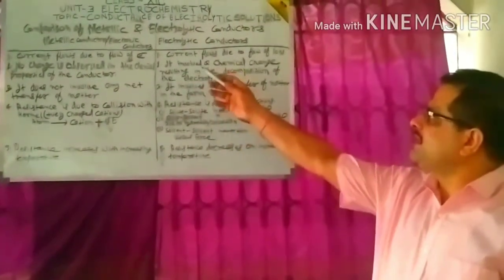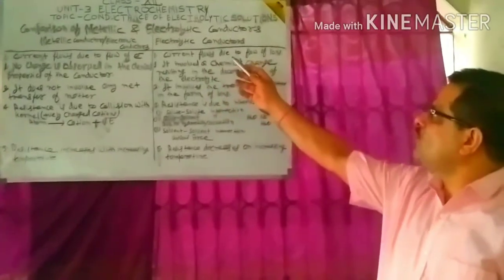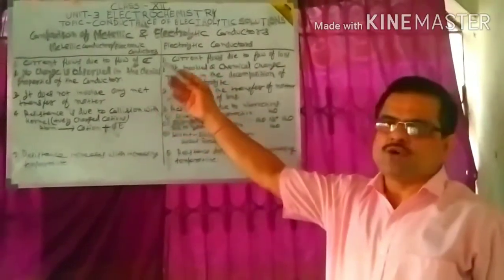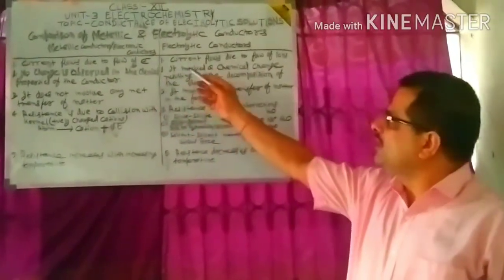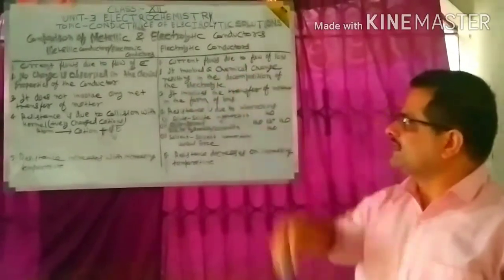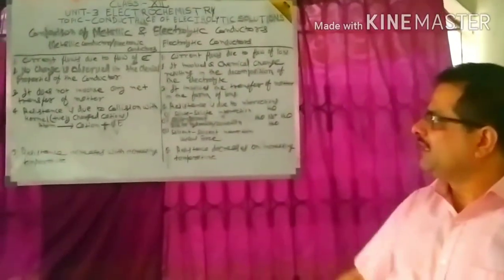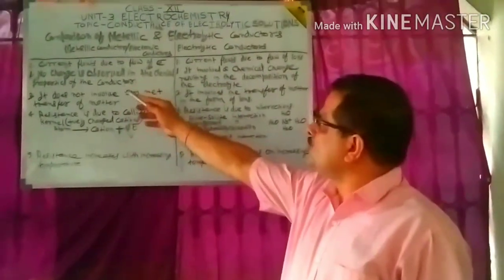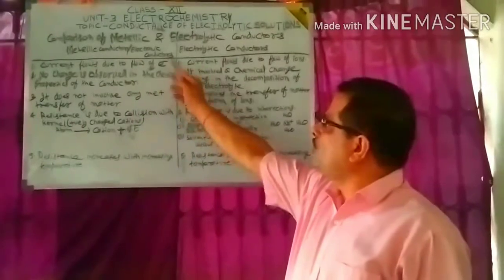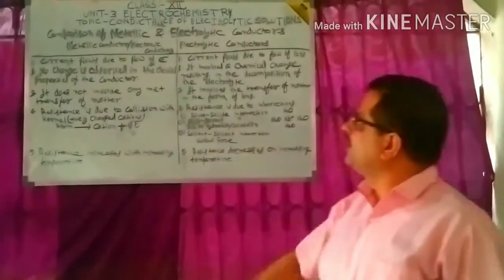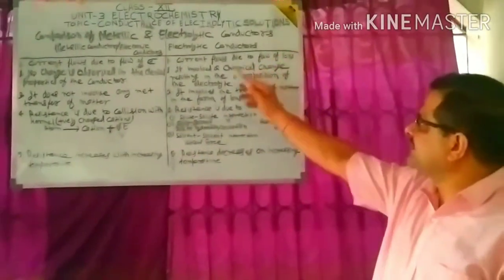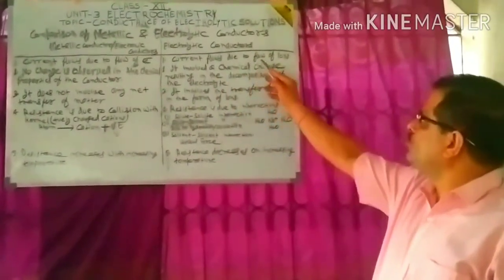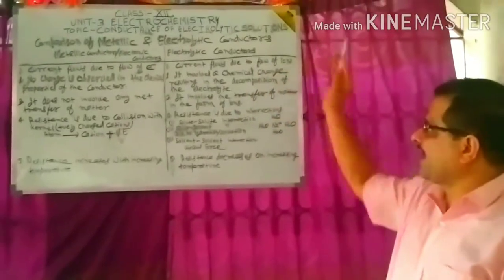Now, a comparison of metallic and electrolytic conductors. Metallic conductors are also called electronic conductors. In metallic conductors, current flows due to the flow of electrons, but in electrolytic conductors, current flows due to the flow of ions.